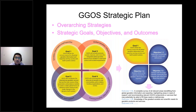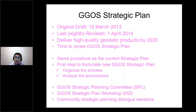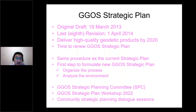The GIGOS strategic plan was originally developed in March 19, 2013, and has been revised several times. The last revision was made on April 1st, 2014. The current strategic plan targets delivering high quality geodesic products by 2020, and since this plan was developed six or seven years ago, it is now time to review and renew the GIGOS strategic plan.